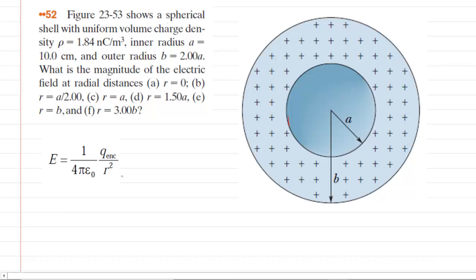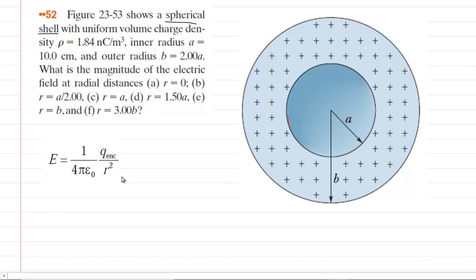In order to calculate the electric field produced by these spherical shell structures, we're going to apply this equation right here. To calculate the electric field, you multiply a constant by the amount of enclosed charge divided by a certain distance squared. What becomes rather challenging in these questions is determining the amount of enclosed charge.